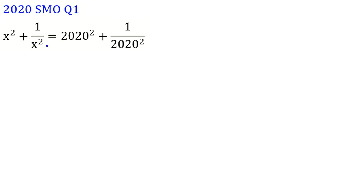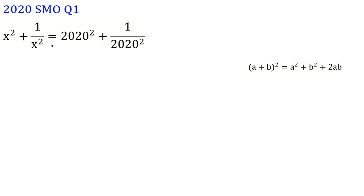We have x squared plus 1 over x squared equal to 2020 plus 1 over 2020. For solving this, you should know this identity: a plus b squared equals a squared plus b squared plus 2ab. So here we have x squared and 1 over x squared, but two times this we don't have.